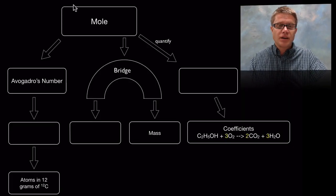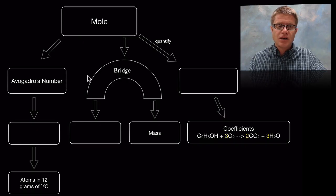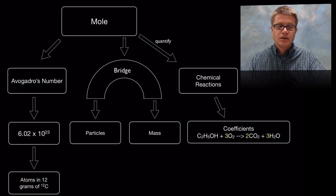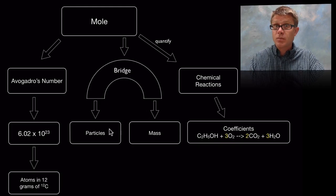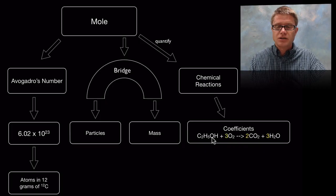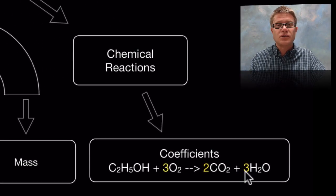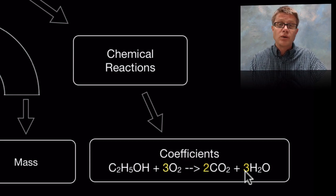So what did we learn in summary? A mole is Avogadro's number — 6.02 times 10 to the 23rd. It forms a bridge between mass and the number of particles. And we use it to quantify chemical reactions: when we look at those coefficients in front of any compound in a chemical equation, it tells us the number of moles.